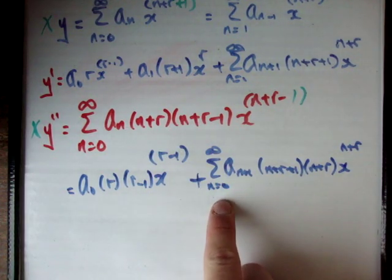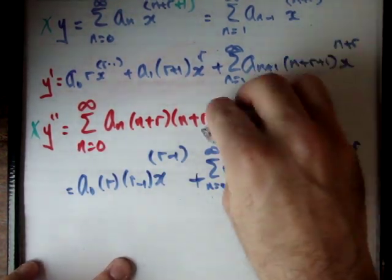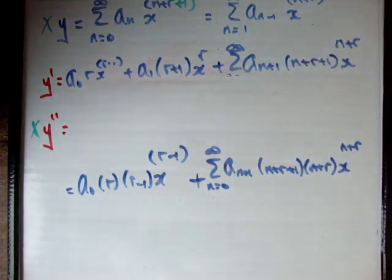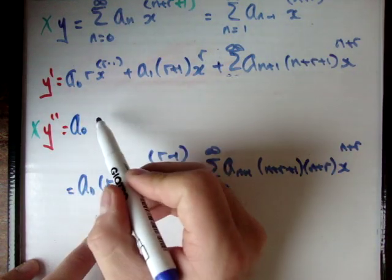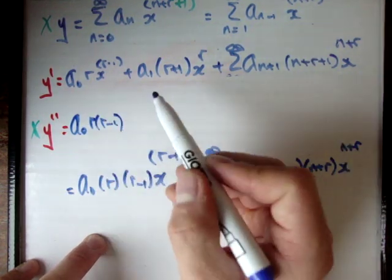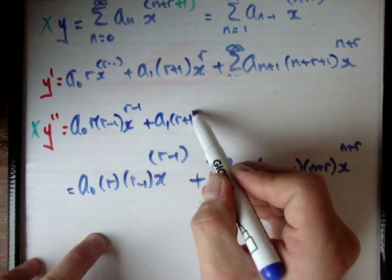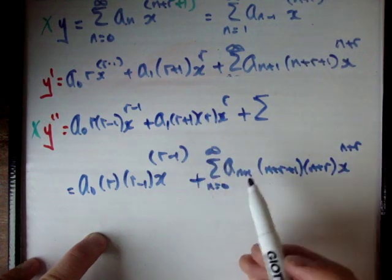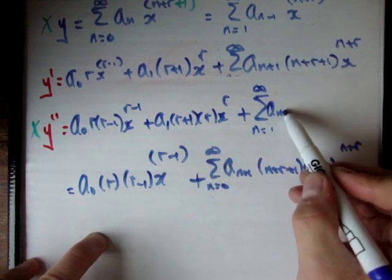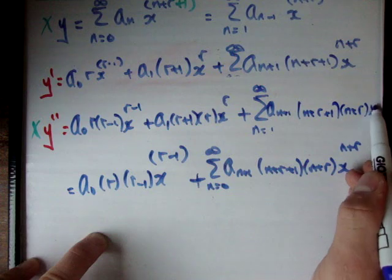We now make the power series start at n = 1. We pad out by one term and start the rest at n = 1, giving: a_0 · r · (r−1) · x^(r−1) + a_1 · (r+1) · r · x^r + sum from n = 1 to infinity of a_(n+1) · (n+r+1) · (n+r) · x^(n+r).